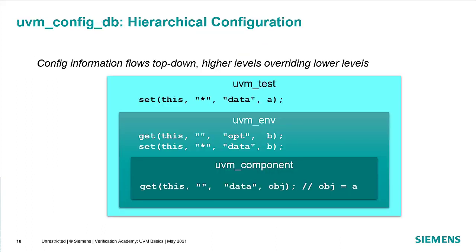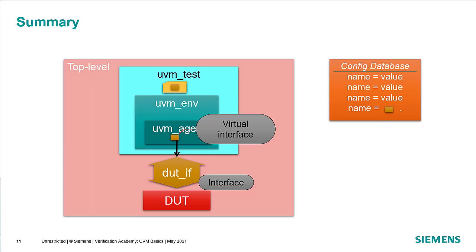Config information in the ConfigDB actually flows top down, so the higher level will override the lower level. At our lowest level, the UVM component is doing a get of the data name and it's going to use the object. At the UVM environment level, we do a set using the star, so anybody looking for 'data' is going to get object B. Then in the test, we're doing a set — again using the star — to anybody looking for 'data', and we're passing in the A object. So down in the UVM component, when it does the get, because the test overrides the environment, the value it will actually get is A for that object.